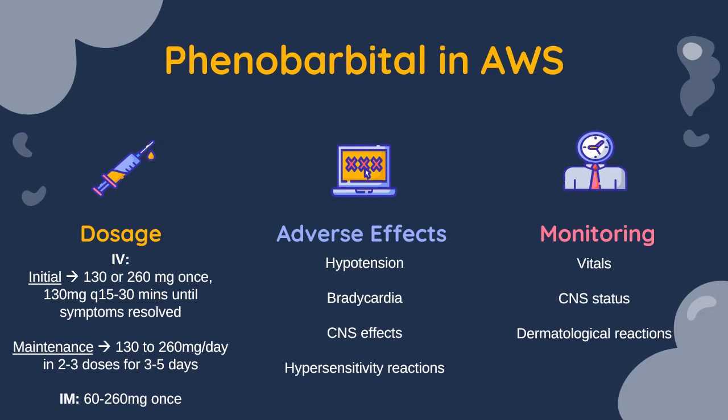IV is preferred but IM can also be given at 60 to 260 milligrams once. Phenobarbital is used in an acute setting for only three to five days normally, so adverse effects we typically associate with phenobarbital won't necessarily happen as often or as severely, but they still need to be considered. These include hypotension, bradycardia, CNS depressant effects, hypersensitivity reactions, and dermatological reactions. Monitor vitals and CNS status, as the patient is going through withdrawal and you want to ensure they're not getting any worse.